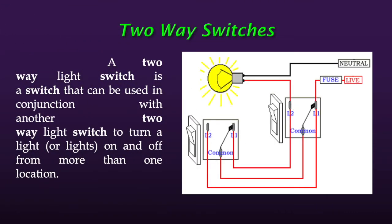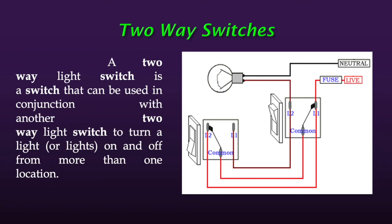The function of a switch is simply to turn appliances on and off. To decide the switch rating, it is based on the power consumption of the appliance and the voltage. In all domestic purposes, our voltage is 220V. For example, if it is a bulb with a power consumption of 20 watts, then using P = V×I, the current is approximately 1/11 ampere.